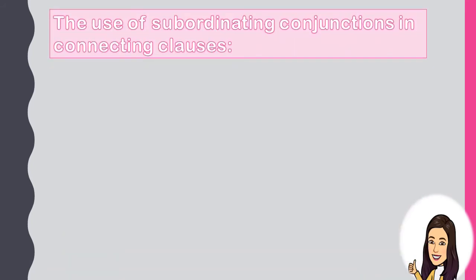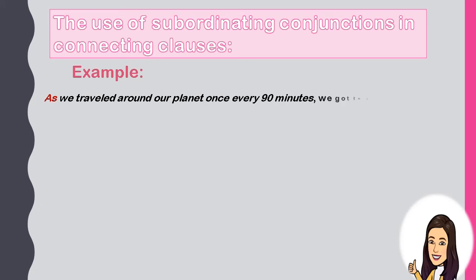Now let us go to the use of Subordinating Conjunctions in connecting clauses. Example: 'As we traveled around our planet once every 90 minutes, we got to see almost all of it.' 'As' is the subordinating conjunction. 'As we traveled around our planet once every 90 minutes' is the dependent clause. 'We got to see almost all of it' is the independent clause. This sentence combination is a complex sentence.